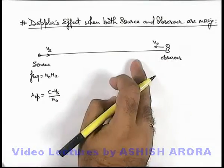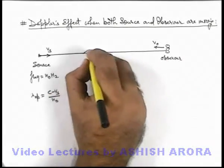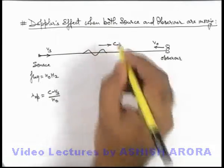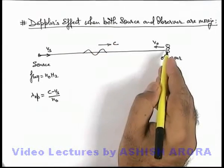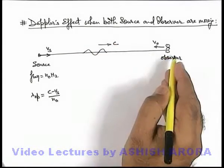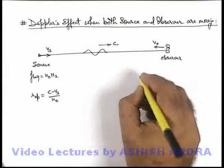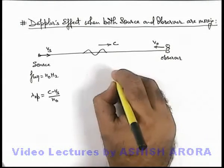And due to motion of observer, the relative speed of sound, as the sound is traveling at a speed c, so apparent speed of sound with respect to observer will be c + vo. So here apparent frequency heard...